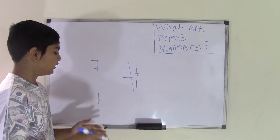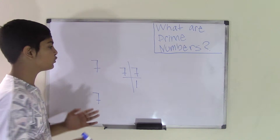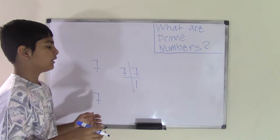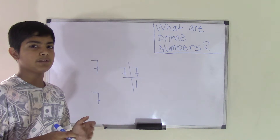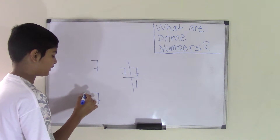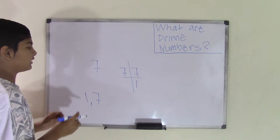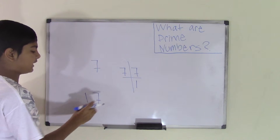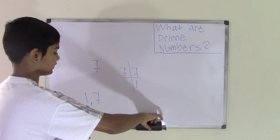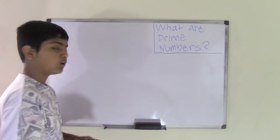So right now the only factor for 7 is 7 itself. When you're working with factors of a number, know that every number has 1 as a factor — you don't always write 1 when finding factors because 1 times any number is that number. So 7 has factors 1 and itself, making it a prime number.